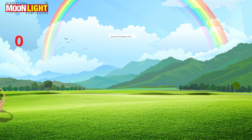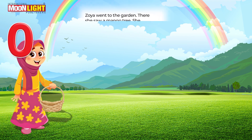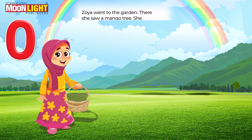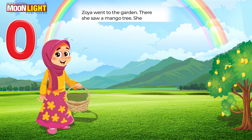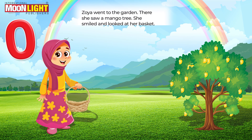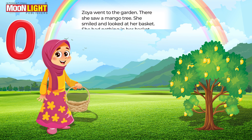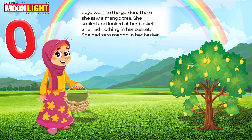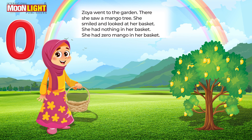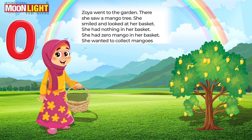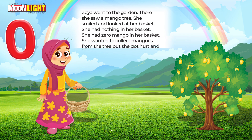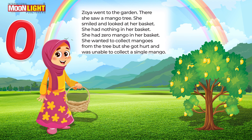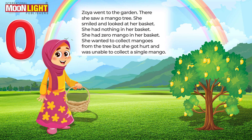Soya went to the garden. There she saw a mango tree. She smiled and looked at her basket — she had zero mangoes in her basket. She wanted to collect mangoes from the tree, but she got hurt and was unable to collect a single mango.